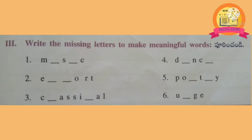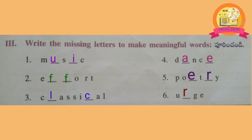3rd Roman: write the missing letters to make meaningful words. M-U-S-I-C: Music. E-F-F-O-R-T: Effort. C-L-A-S-S-I-C-A-L: Classical. D-A-N-C-E: Dance. P-O-E-T-R-Y: Poetry. U-R-G-E: Urge.